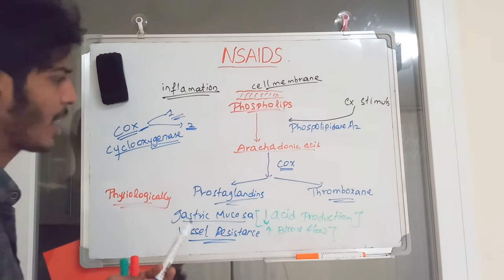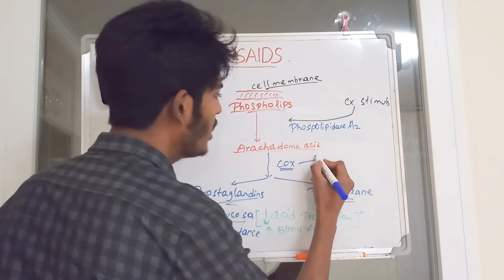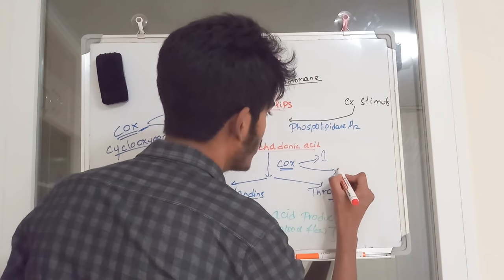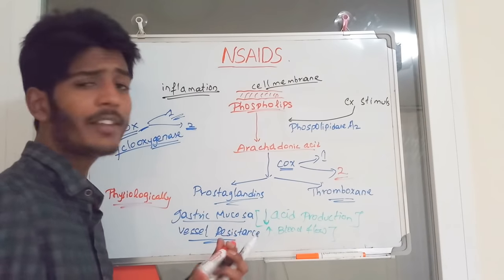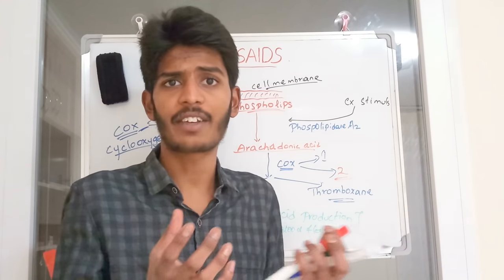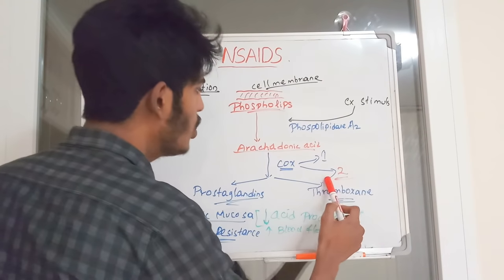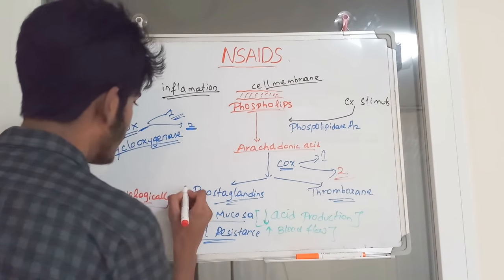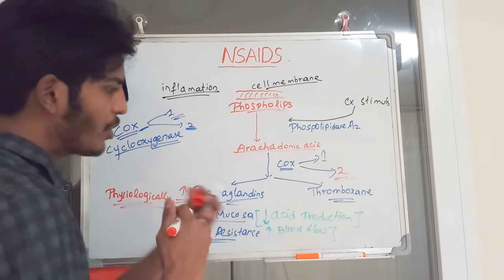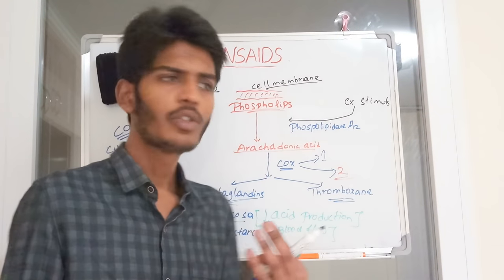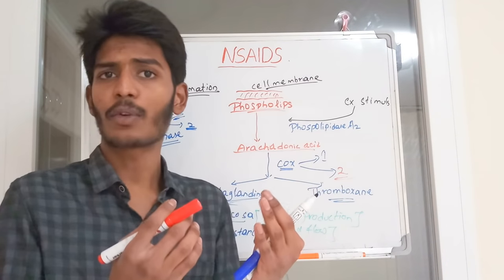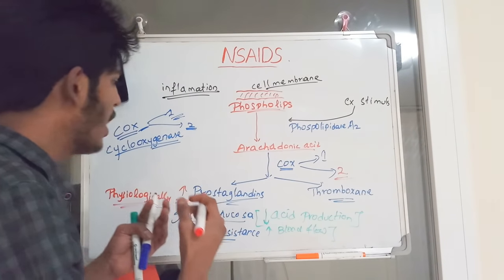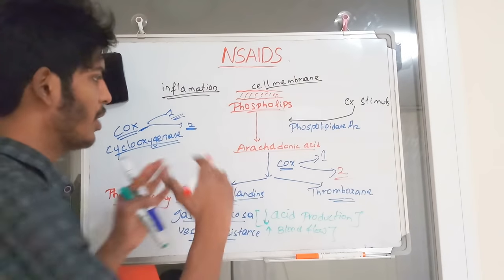Under pathological conditions, COX-2 is produced. COX-2 is an isoform of COX-1 — it has a similar structure but a different function. When COX-2 is produced, it increases the production of prostaglandins. During inflammation, other factors also stimulate prostaglandin production.